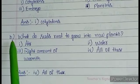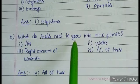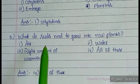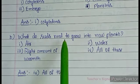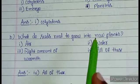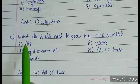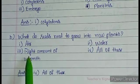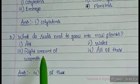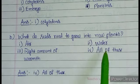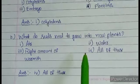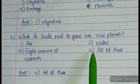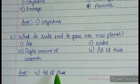Question B: what do seeds need to grow into new plants? Options are: first — air, second — water, third — right amount of warmth, and fourth — all of these. Seeds need air, water, and right amount of warmth, so the fourth option, all of these, is the correct answer.